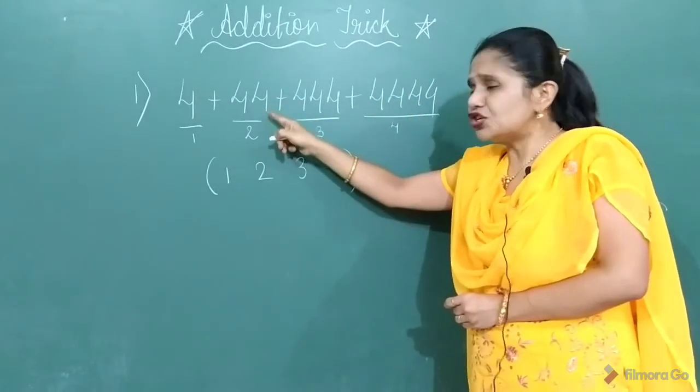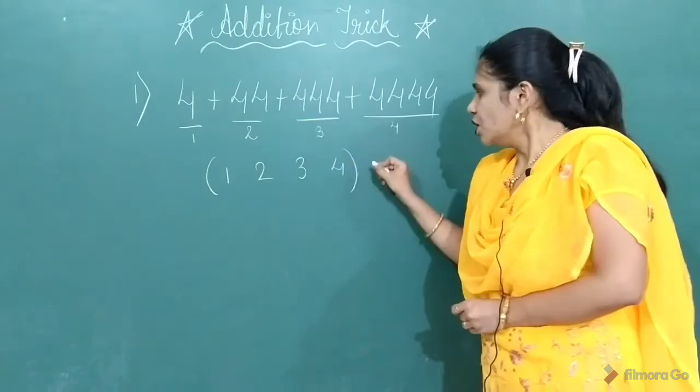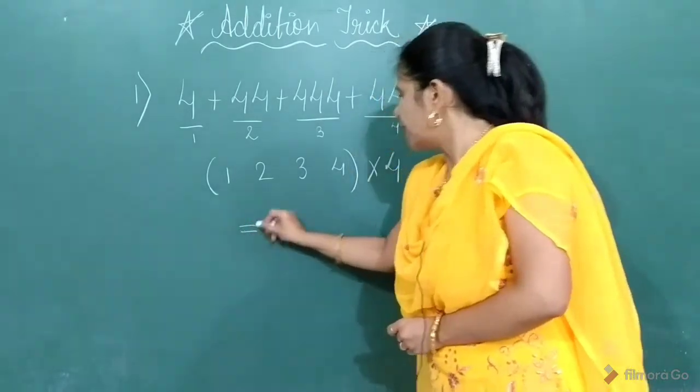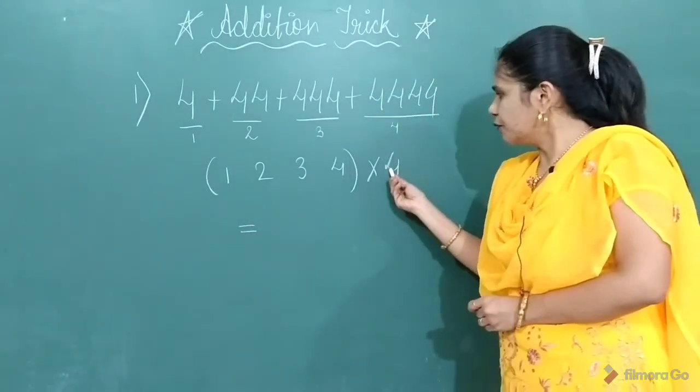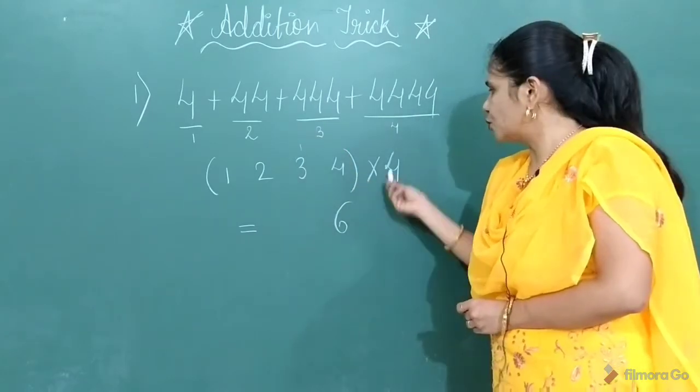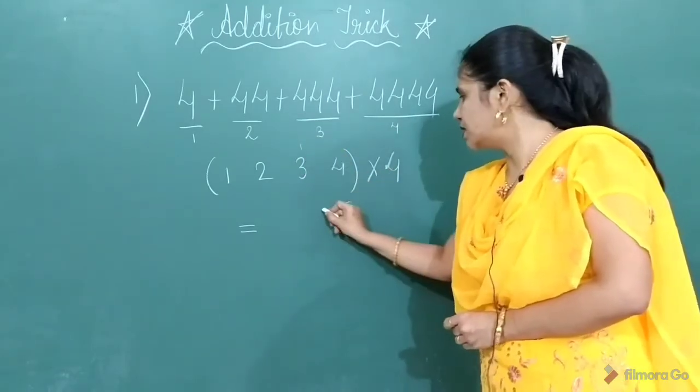And as the digit 4 is repeating here, you have to multiply by 4. So when you will multiply by 4, what you will get? 4 fours are 16. 1 will carry to the next group. 4 threes are 12 plus 1, 13.